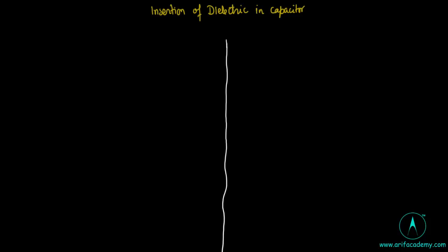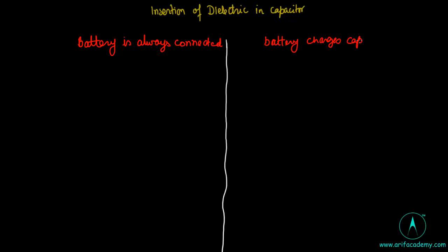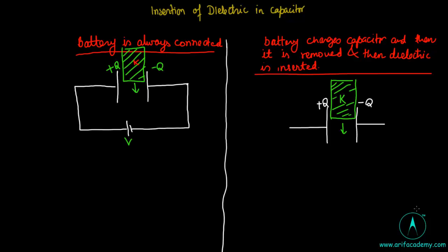In this video, I am going to discuss the effect of insertion of a dielectric in a capacitor. This discussion is divided into two parts: first, when a battery is connected all the time, and second, when the battery has charged the capacitor and is then removed before the dielectric is inserted. We will explore what happens to physical quantities like energy stored, electric field, and capacitance.